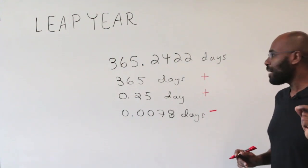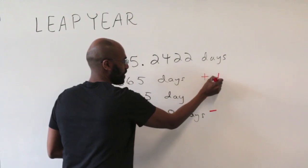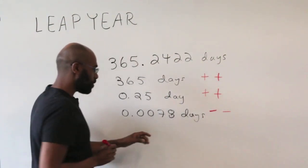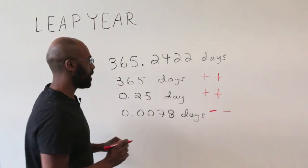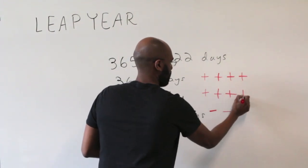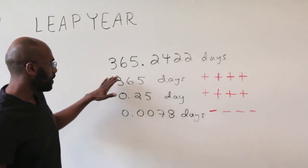Now let's look at what happens over the course of four years. We get 365 days again, another quarter of a day, and then another minus for this little bit of a day that's taken away. And over the course of four years, we get this total contribution. So if we look at this,